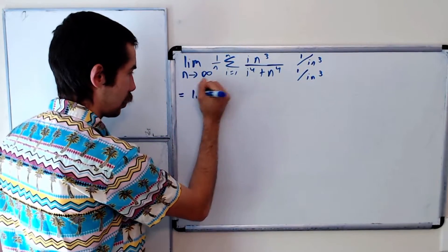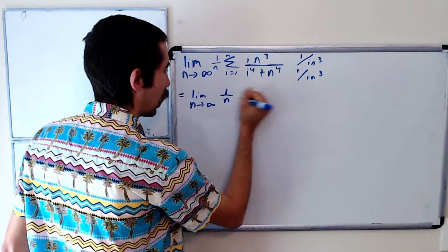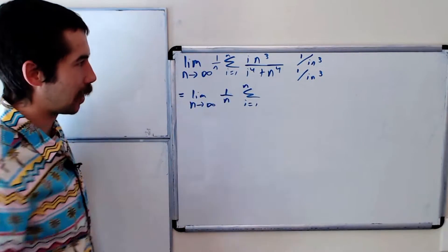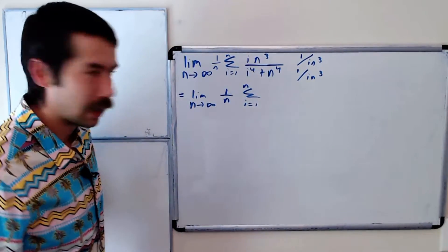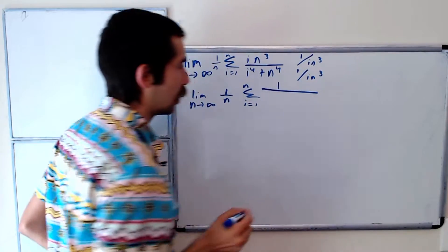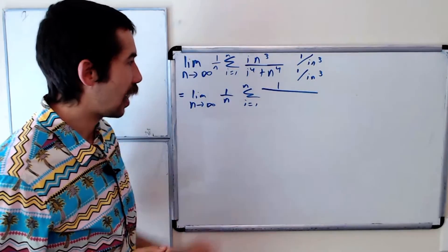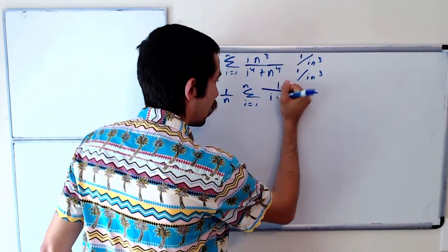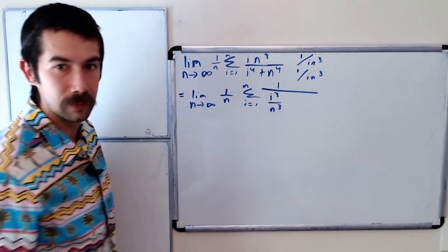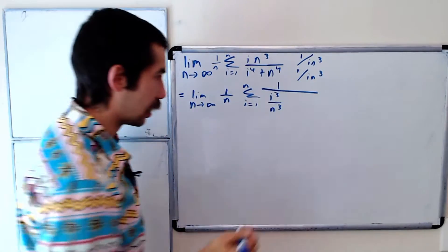So our limit is the limit as n goes to infinity — that doesn't change. We keep 1 over n on the outside, sum from i equals 1 to n. Our numerator is now just 1. And our denominator: i⁴ over i·n³ gives us i³ over n³, and n⁴ over that term is just n over i.